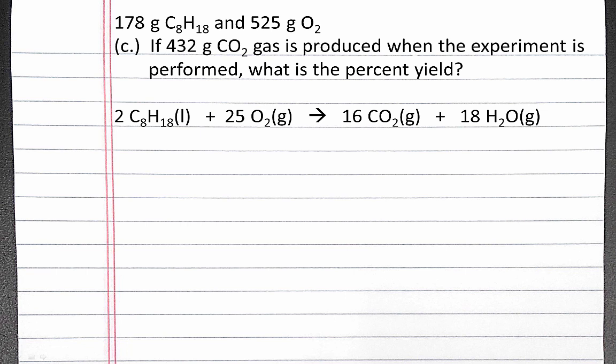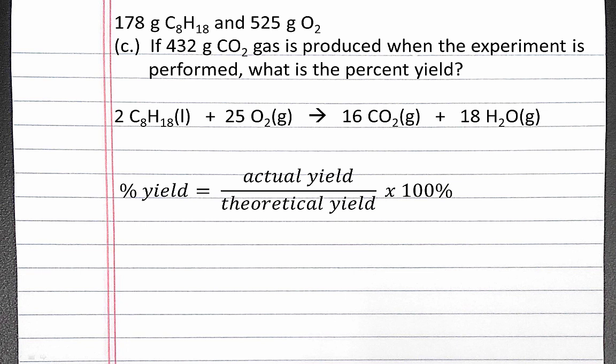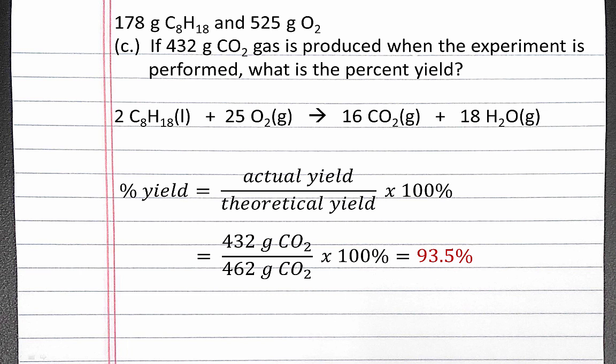For Part C, we're given how much carbon dioxide gas is actually produced when the experiment is performed, and we want to calculate the percent yield. Our equation for percent yield is actual yield divided by theoretical yield times 100%. Our actual yield is 432 grams of carbon dioxide gas, which is produced when the experiment is actually performed. Our theoretical yield, calculated in Part A, is 462 grams of carbon dioxide. When we divide these numbers and multiply by 100%, we get 93.5%.